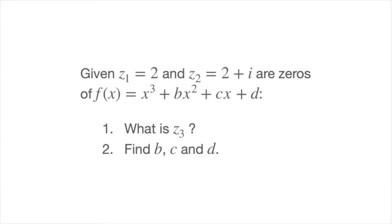We're told that the complex numbers z1, which equals 2, and z2, which equals 2 plus i, are zeros of the polynomial function f(x), which equals x cubed plus bx squared plus cx plus d.